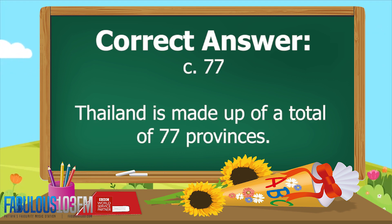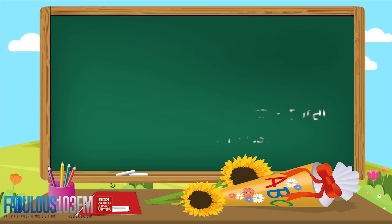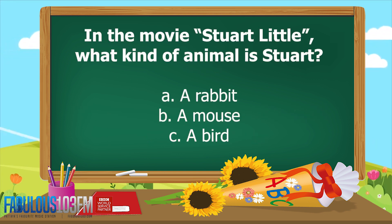And the correct answer is c) 77. Thailand has a total of 77 provinces. New questions for today! We'll kick off with a fun one...